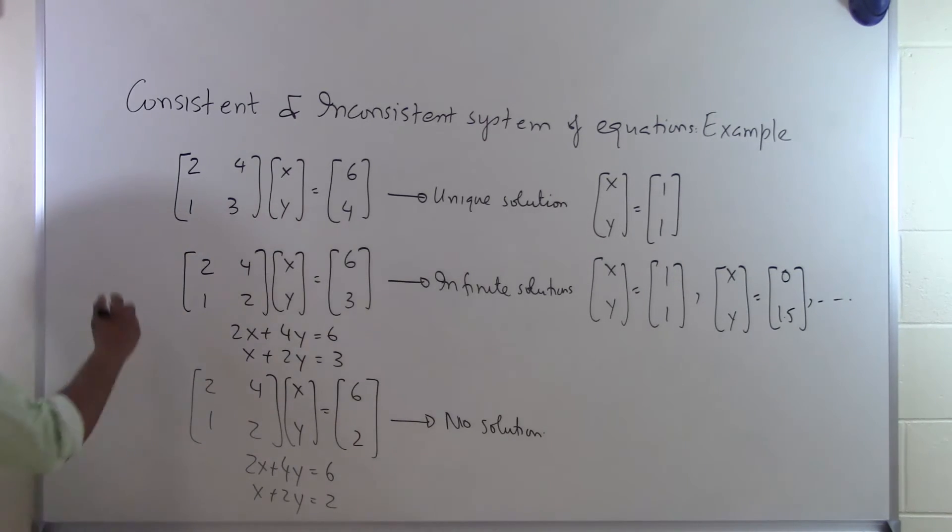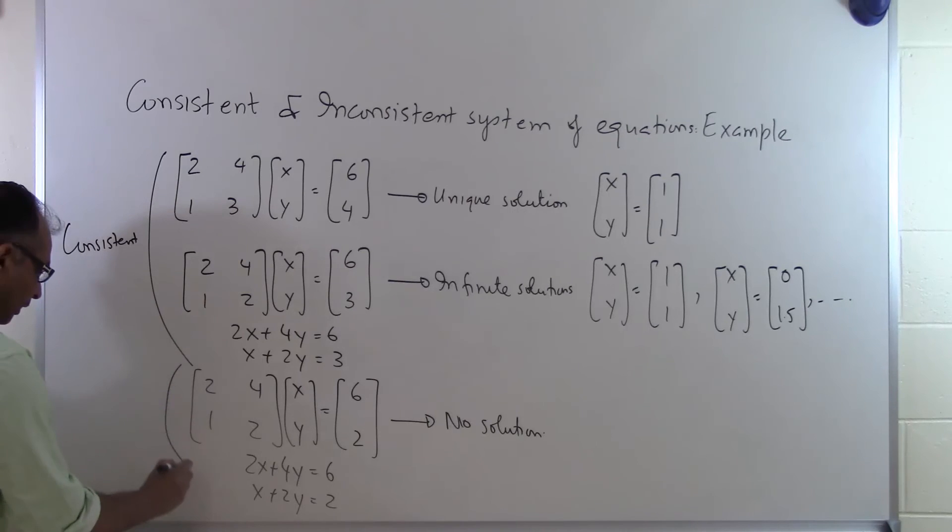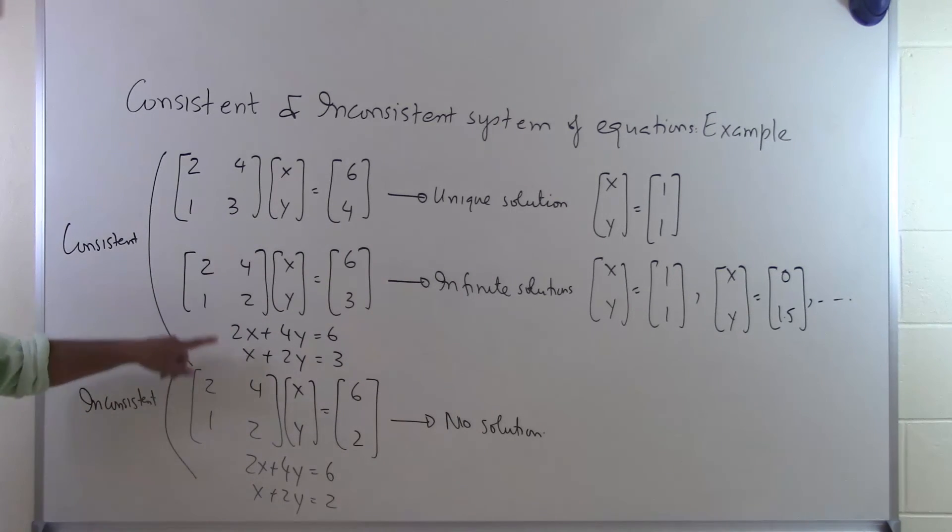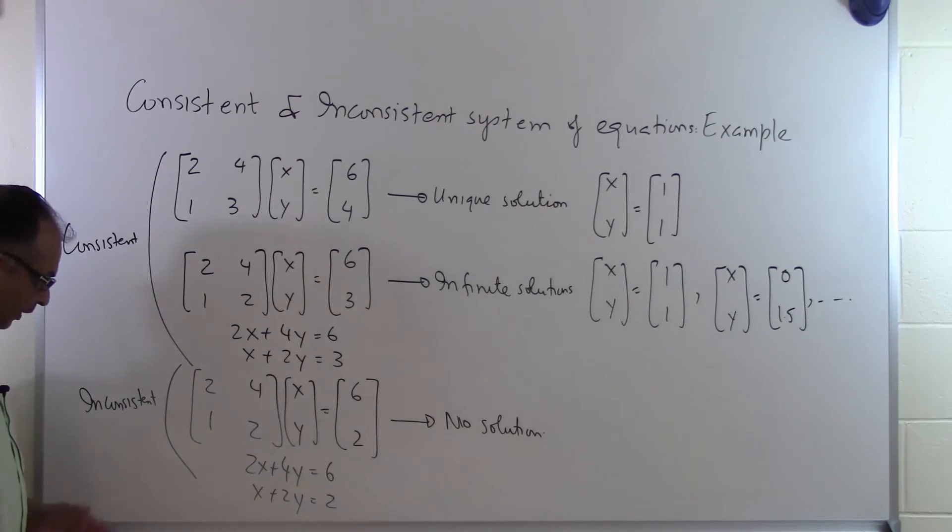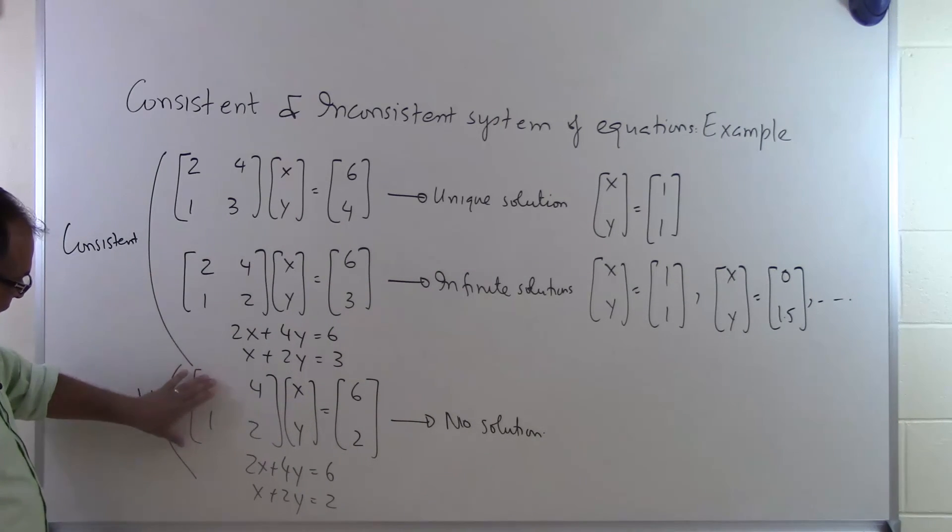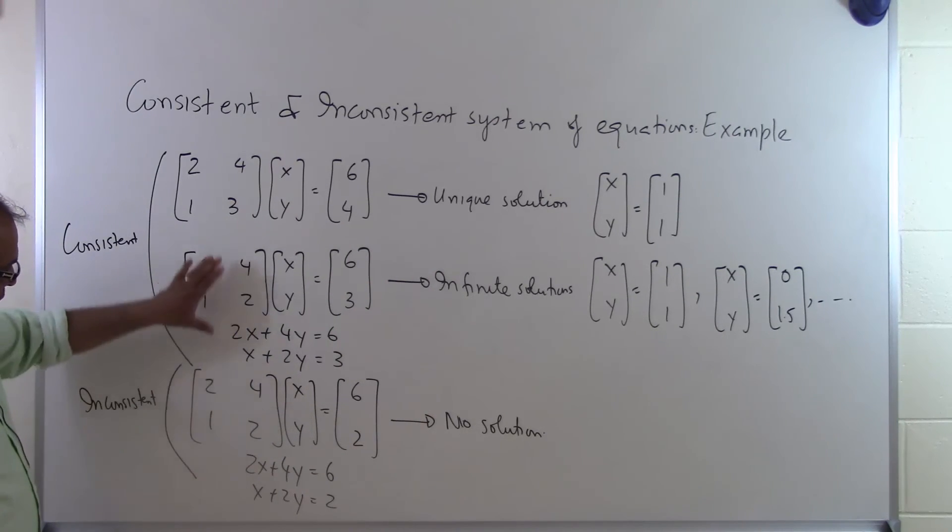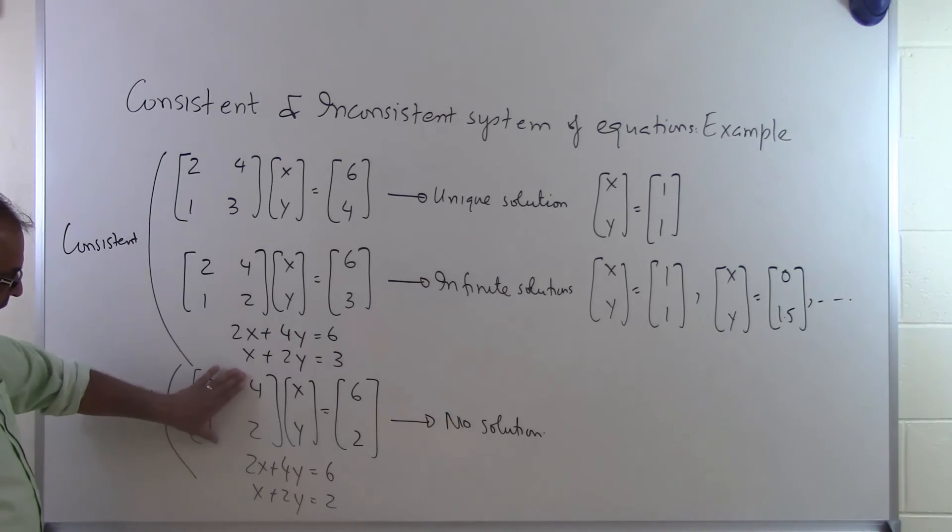So these two right here are consistent systems of equations, and right here you get an inconsistent system of equations. One of the things that you are finding out here is that for the same coefficient matrix here and here, you can possibly get inconsistent or no solution, or you can get infinite solutions which is also part of the consistent solution. So just be aware of the fact that here we got two sets of equations with the same coefficient matrix. In one case we are getting infinite solutions. In another case we are getting no solution.